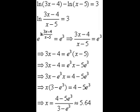We get x equals 4 minus 5 times e to the third power divided by 3 minus e to the third power. Now normally that answer is good enough, but we have a small problem. You see the original problem has ln of x minus 5. It must be positive. So we must make sure x is greater than 5. We have 5.64, so that's good.